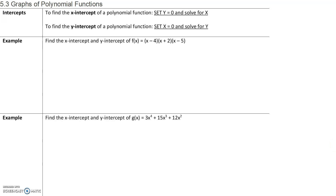In this section, we will be looking at the graphs of polynomial functions. To find the x-intercept, we need to set y equal to 0 and solve for x. To find the y-intercept, we need to set x equal to 0 and solve for y. For our first example, let's find the x and y-intercepts for each of these polynomial functions.